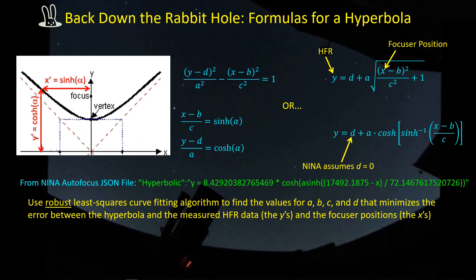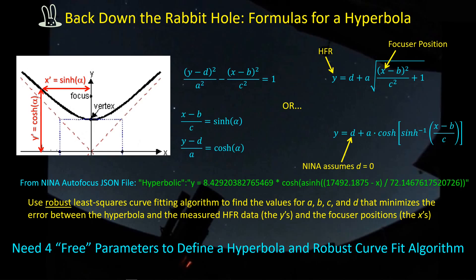You also need a robust least squares curve fitting algorithm - it takes some effort to find the best fit. It's an optimization process in which the curve fitting algorithm has to iteratively adjust parameters A, B, C, and D to find the combination that minimizes the error between your data and the shape of a hyperbola. We need four free parameters to define a hyperbola and a robust curve fit algorithm to deal with noise in the data.